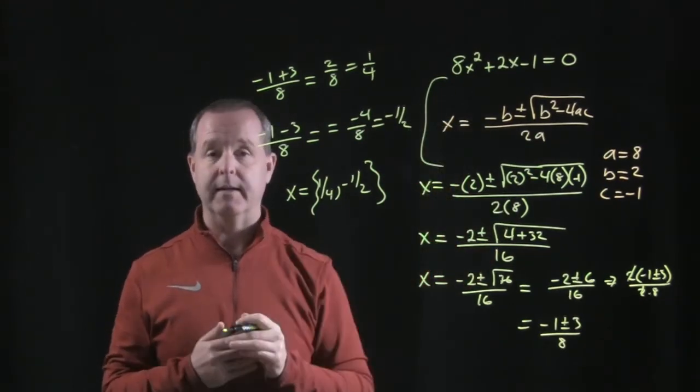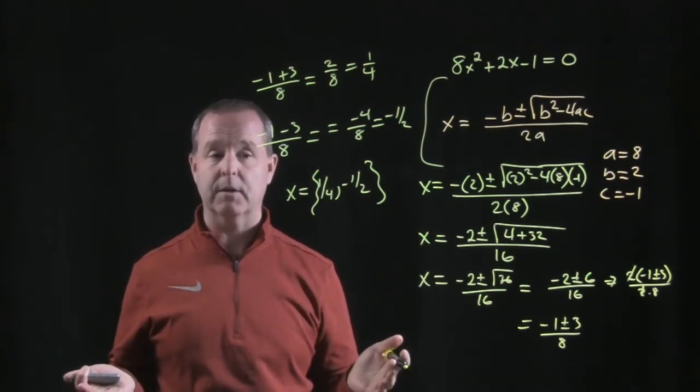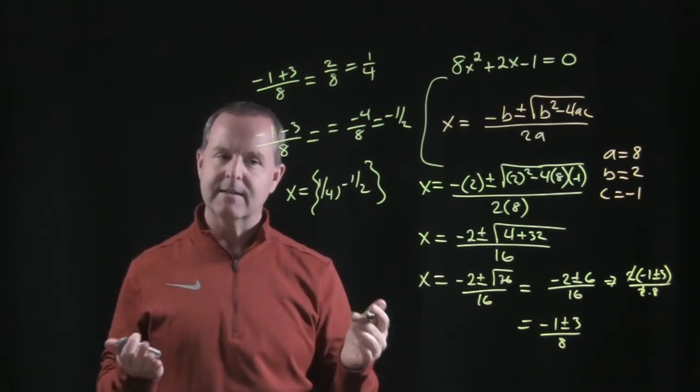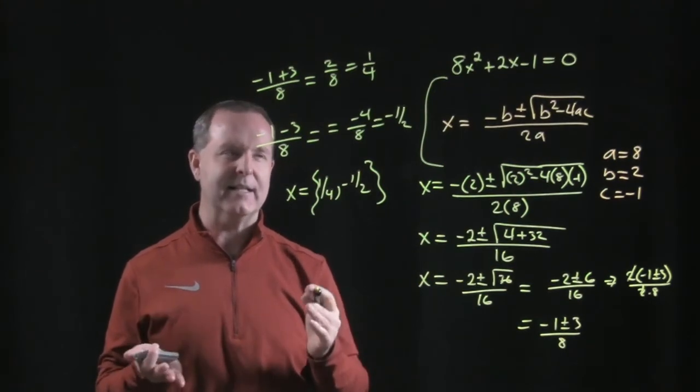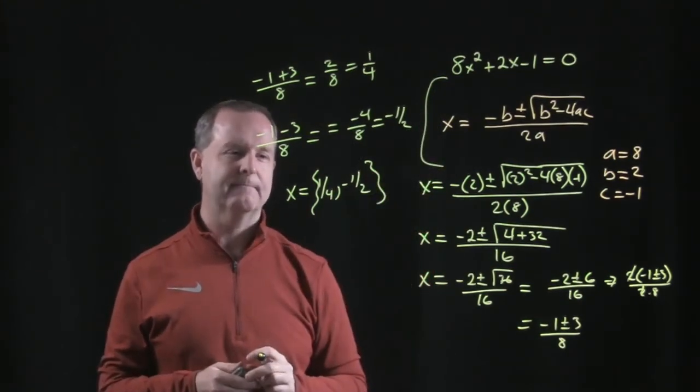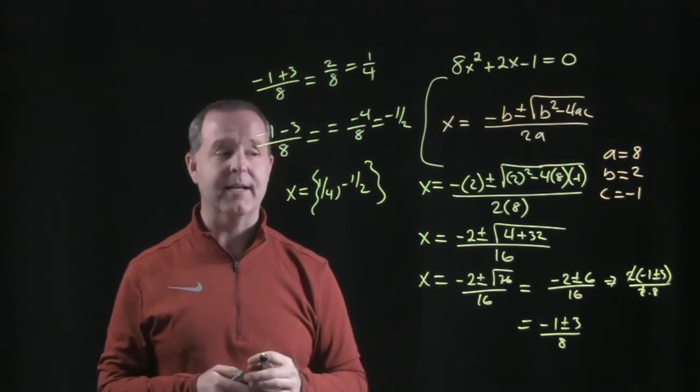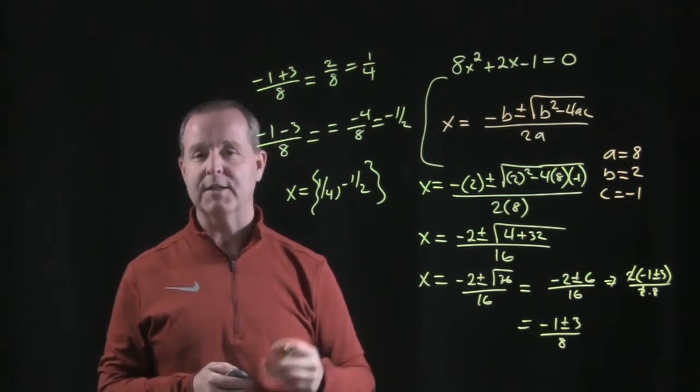Could you have solved this by factoring? Because we always want to see if we can factor the terms first. Yes, but I don't know if we would have got 1 fourth and negative 1 half as easily, by trying to factor that. So, quadratic function, quadratic equation helped us.